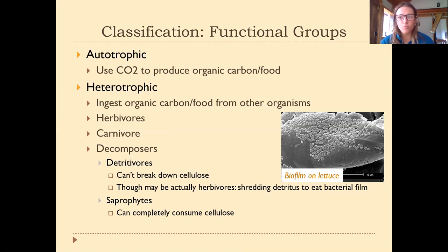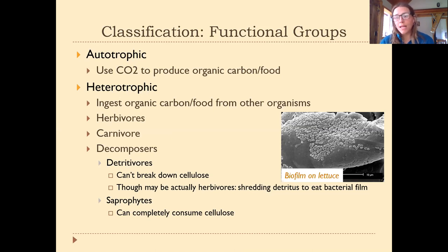Humans, other animals, fungi, and protists cannot make their own food — they are called heterotrophic organisms. Instead of feeding themselves from CO₂ and sunlight, they ingest organic carbon from another organism. They must either eat an animal that ate a plant, eat a plant directly, or eat fungi that absorbed energy from decomposing plants and animals. This includes herbivores, carnivores, and all other feeding strategies.